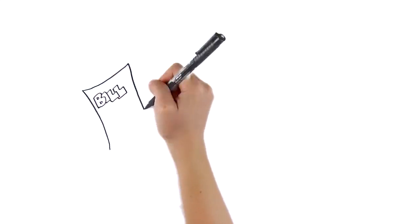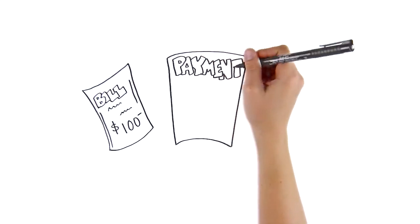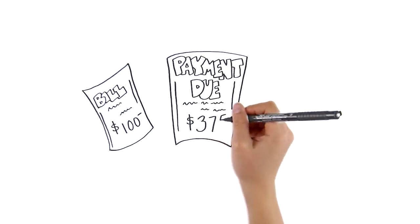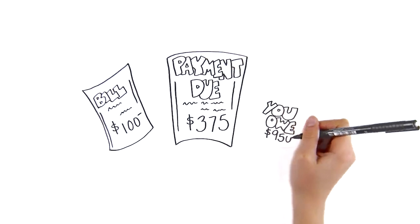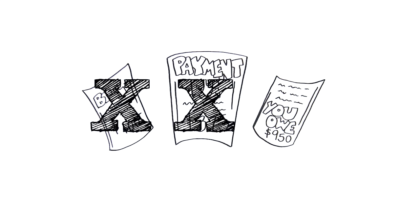Some people like to modify this by paying the smallest balances first and then rolling the payment into the next smallest one. While this might not save you as much money as paying off the most expensive first, it can be very motivating to pay off the small amounts quickly, leaving you fewer bills to pay.